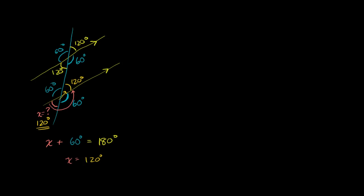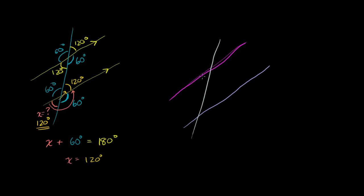Let's do another one. Let's say I have two lines here — one in purple and one in blue. And then I have a line that intersects both of them. Let's say that this angle right here is 50 degrees, and let's say I were also to tell you that this angle right here is 120 degrees.